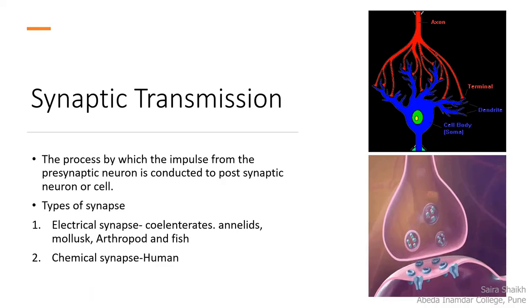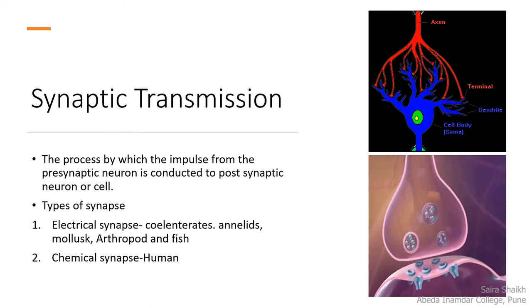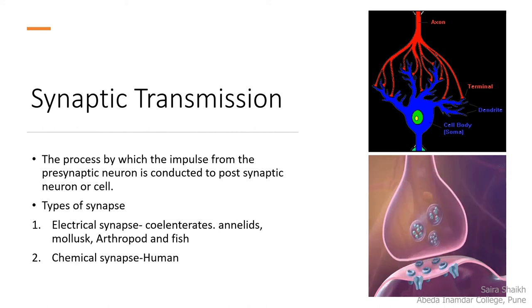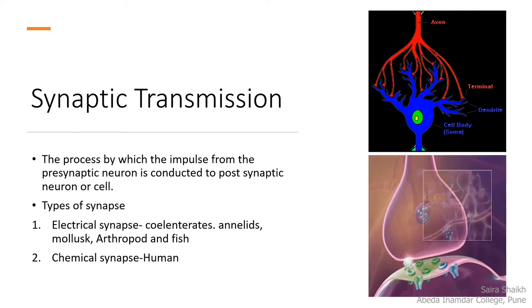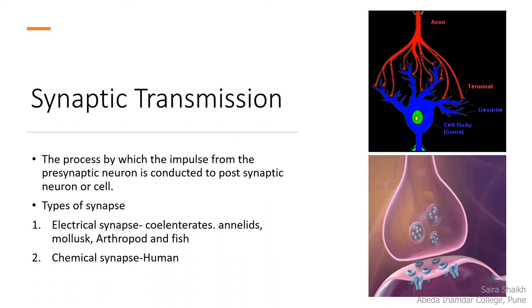Synaptic transmission is the process by which an impulse from the presynaptic neuron is conducted to the postsynaptic neuron or postsynaptic nerve cell. It is of two types: electrical synapse and chemical synapse. Electrical synapse is observed in lower animals — cnidarians, annelids, mollusks, arthropods, and fishes.